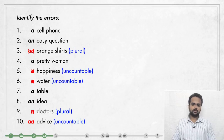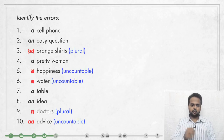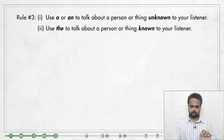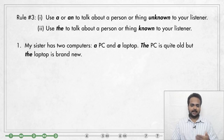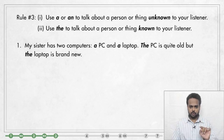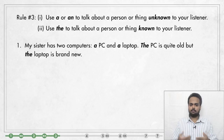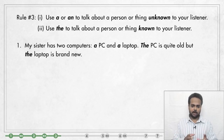So let's now talk about how to choose between A or AN and THE. Rule number three: use A or AN to talk about a person or thing unknown to your listener, and use THE to talk about a person or thing known to your listener. For example: my sister has two computers — a PC and a laptop. The PC is quite old but the laptop is brand new. I say a PC and a laptop because that's the first time I'm mentioning the two computers — they are unknown to you, the listener. But then I can say: the PC is quite old but the laptop is brand new. When I say the PC, you know which one I'm talking about — my sister's PC. So the PC and the laptop are now known to you.